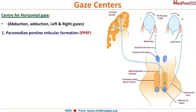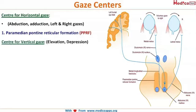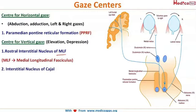The PPRF, that is paramedian pontine reticular formation, controls abduction and adduction — nothing but the horizontal gaze. For vertical gaze, that is elevation and depression, it is controlled by three different centers. The most important one is the rostral interstitial nucleus of the medial longitudinal fasciculus — you can simply remember it as MLF. The second one is the interstitial nucleus of Cajal, and the third one is the posterior commissure.